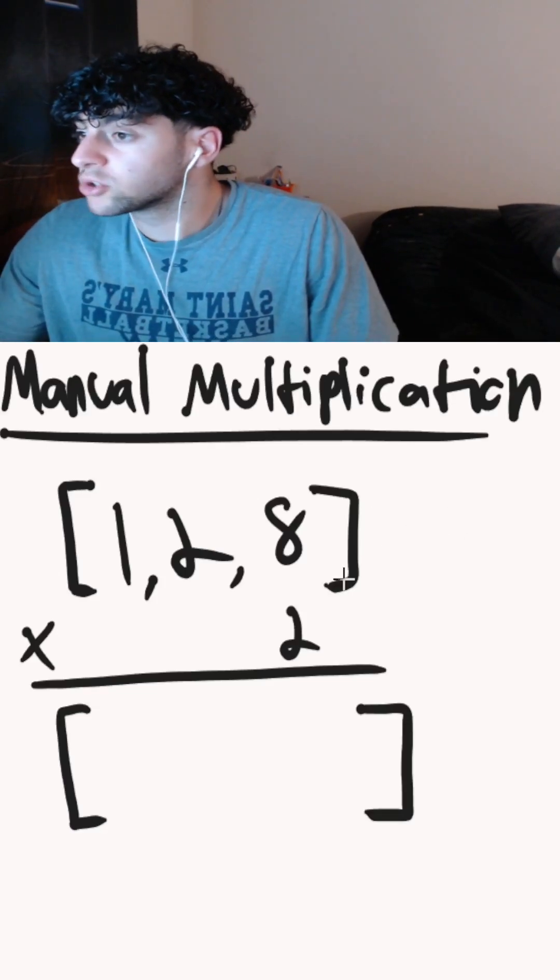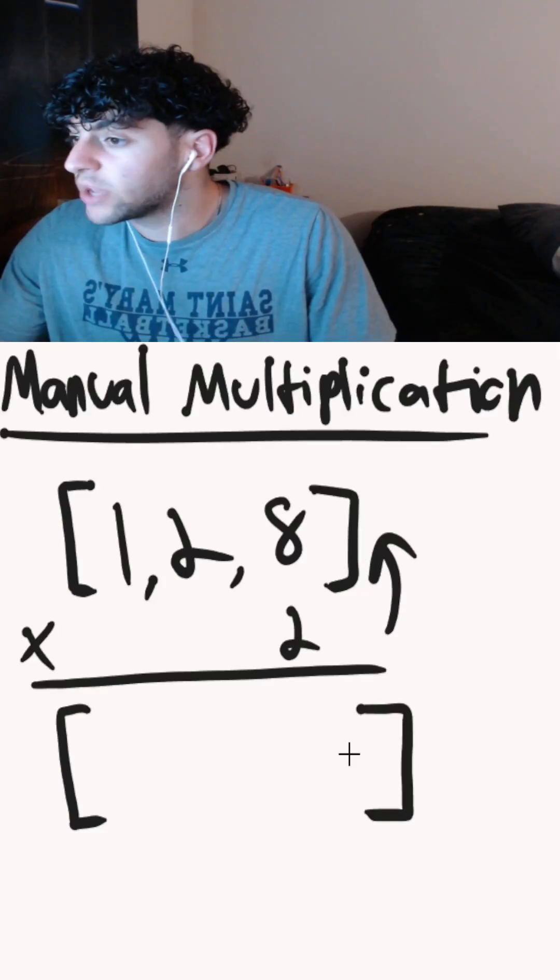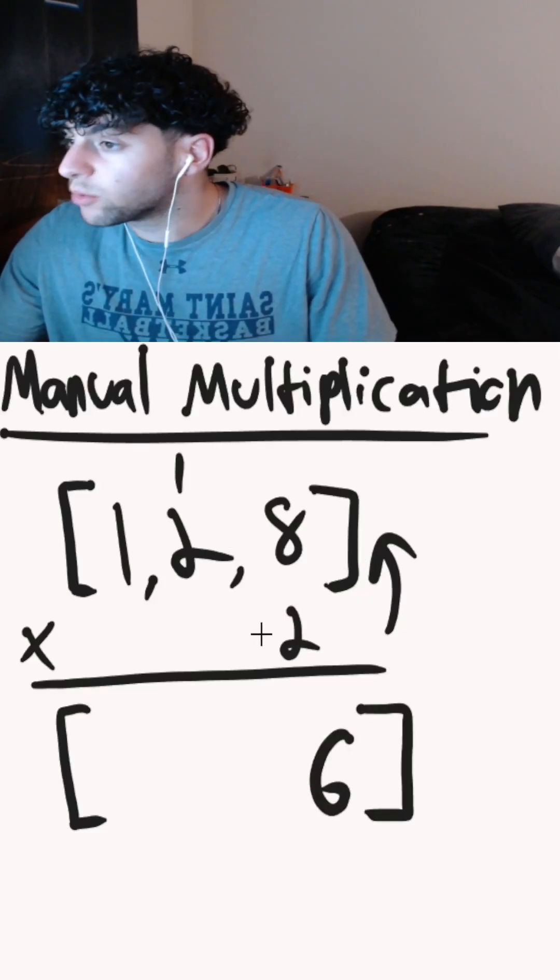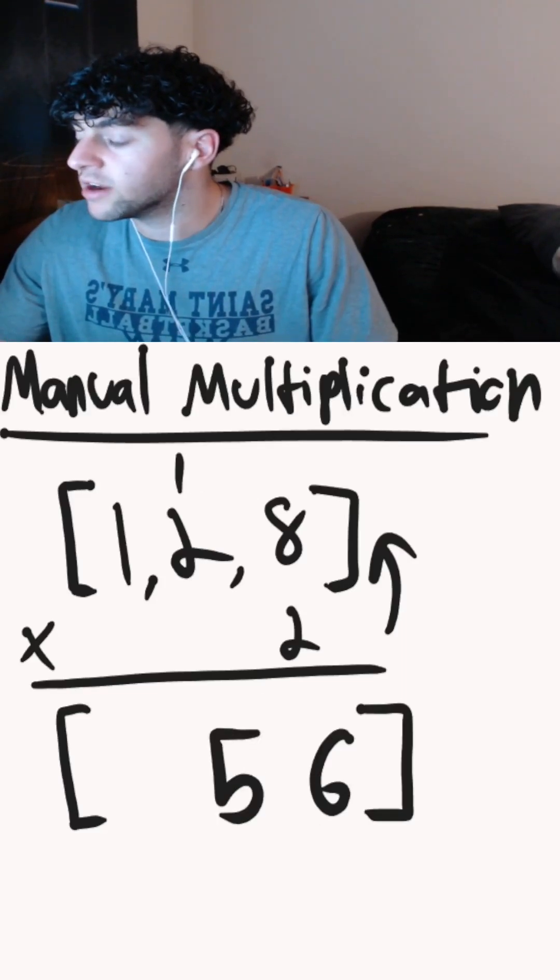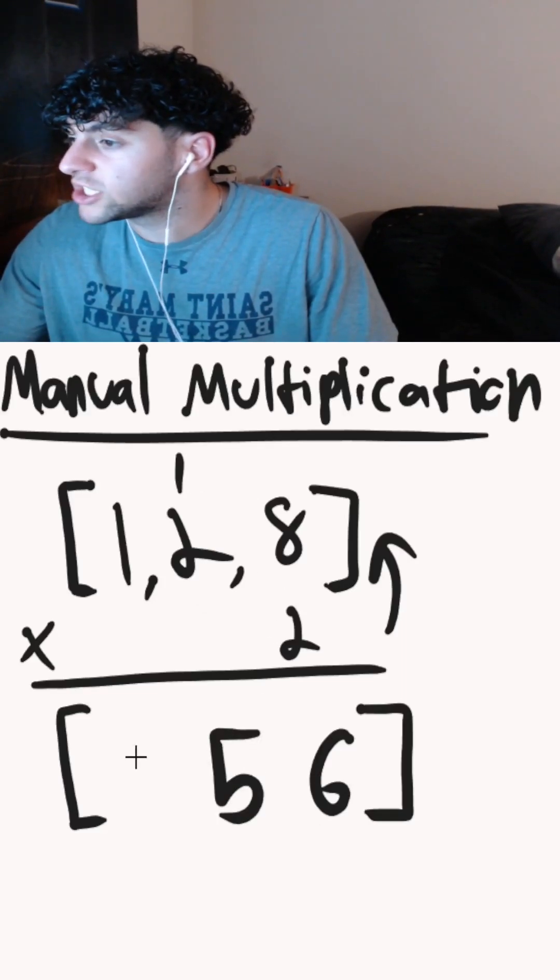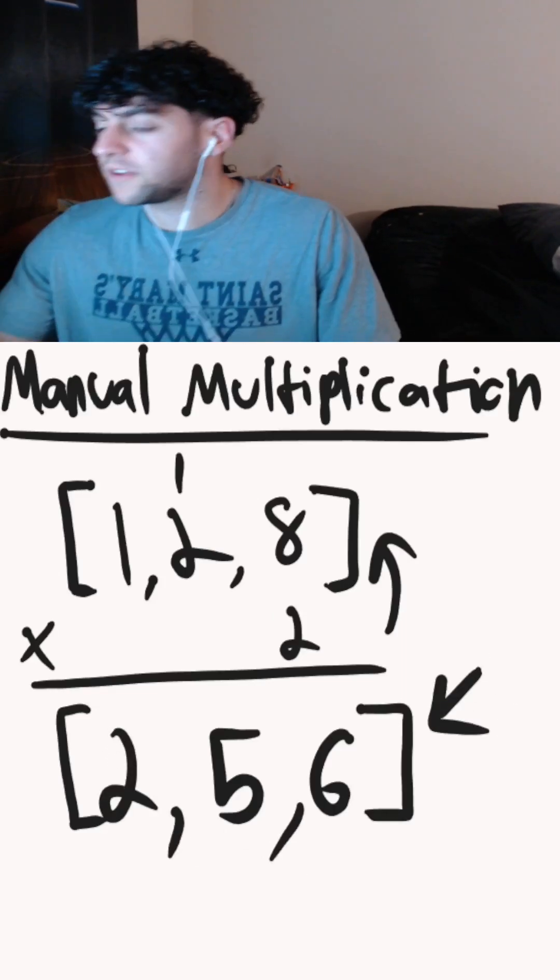Just like in middle school, we multiply 2 by the first digit, which is 8, getting 16. We put 6 here and carry the 1. Then 2 times 2 plus 1 equals 5. Lastly, 2 times 1 equals 2. We store that in our array and get our new product of 256.